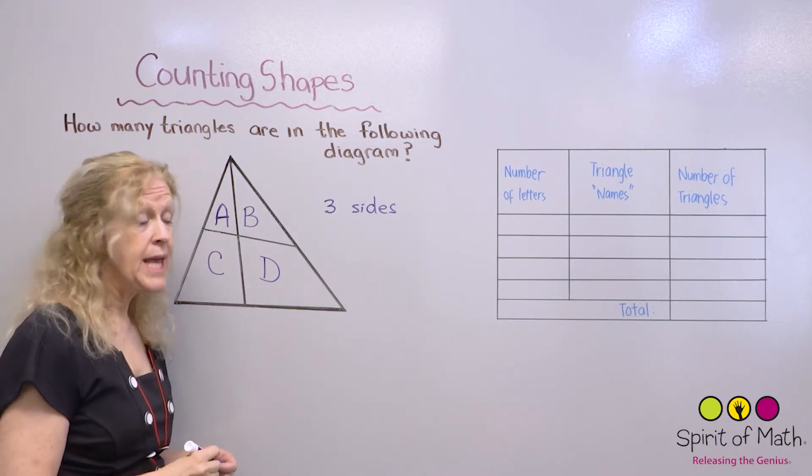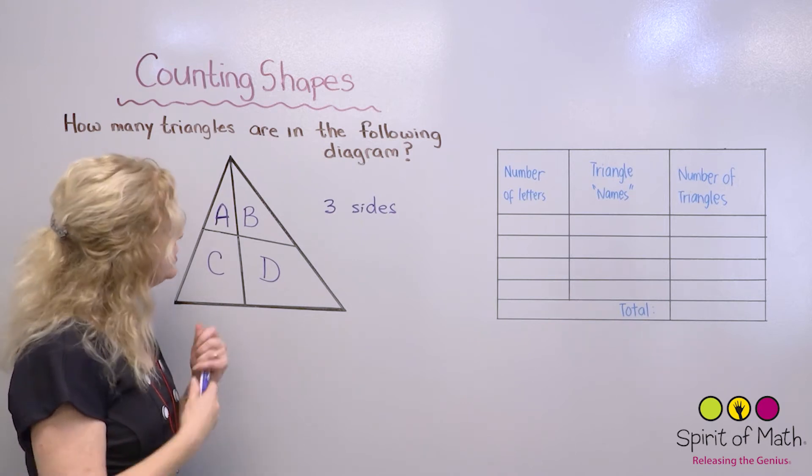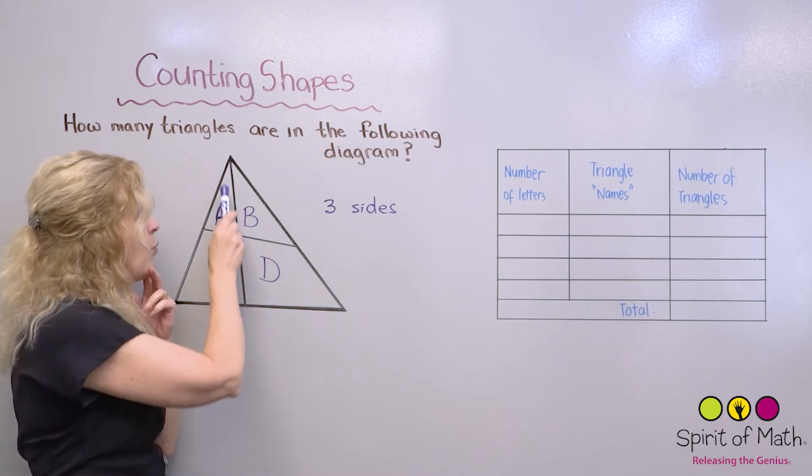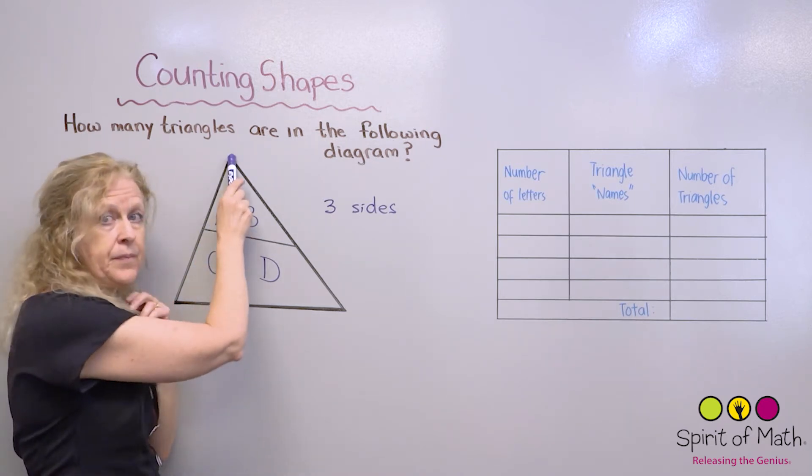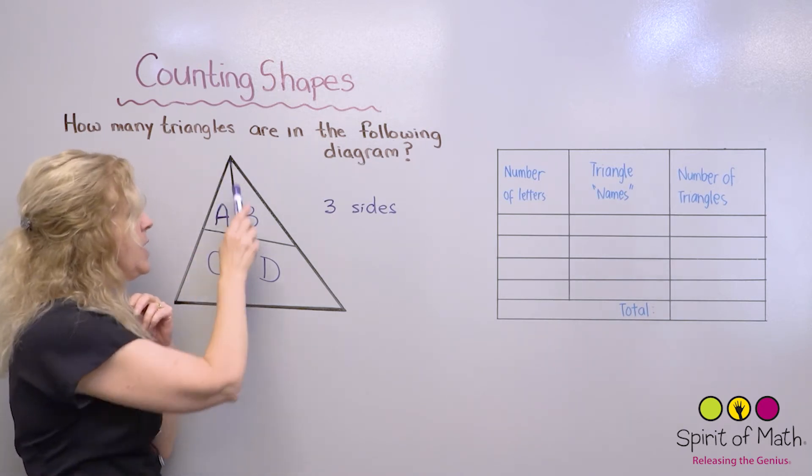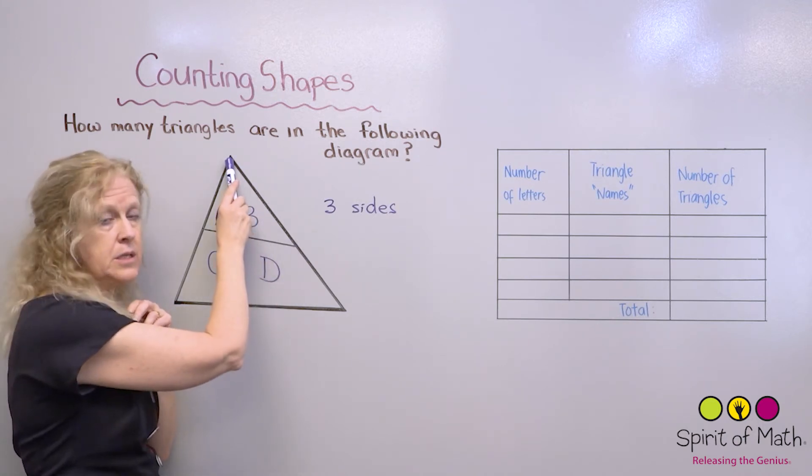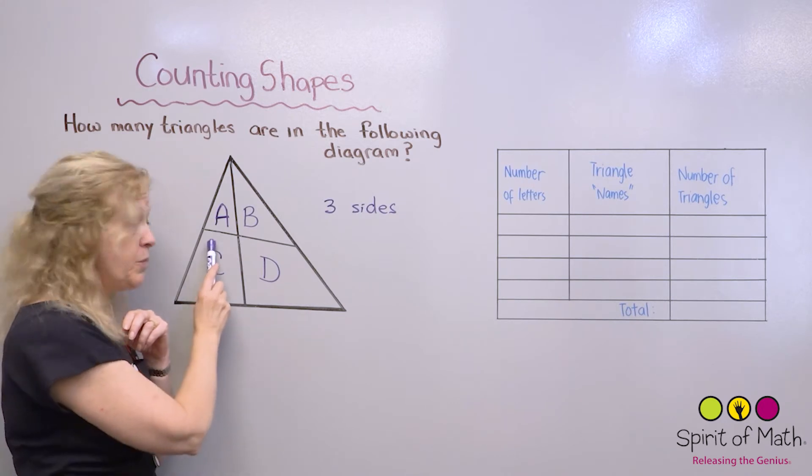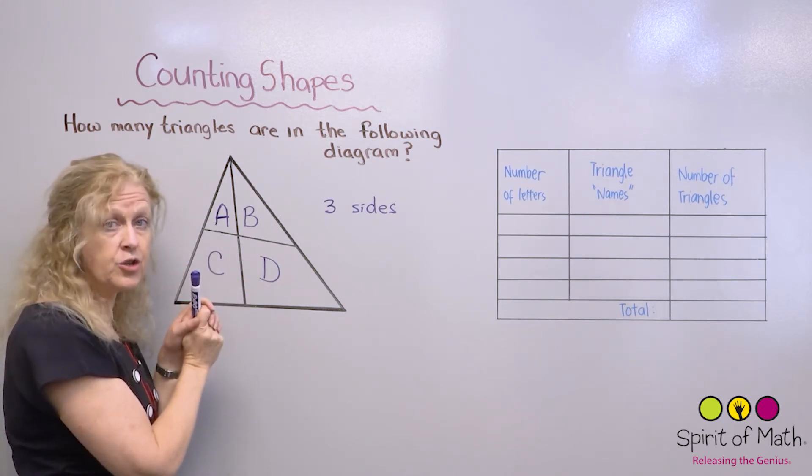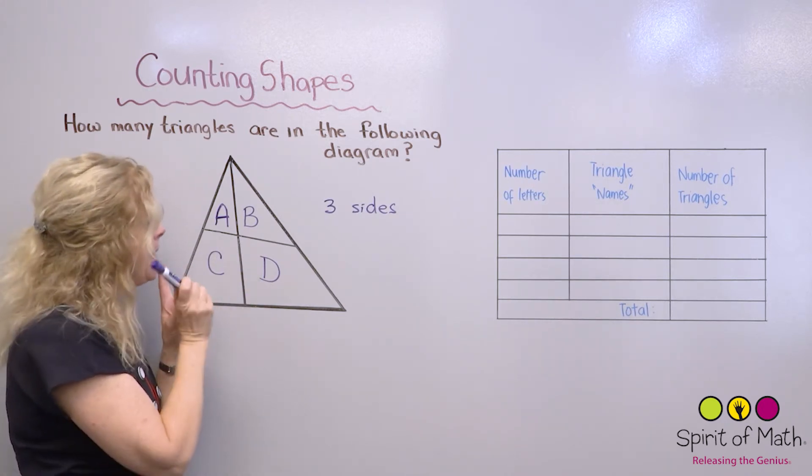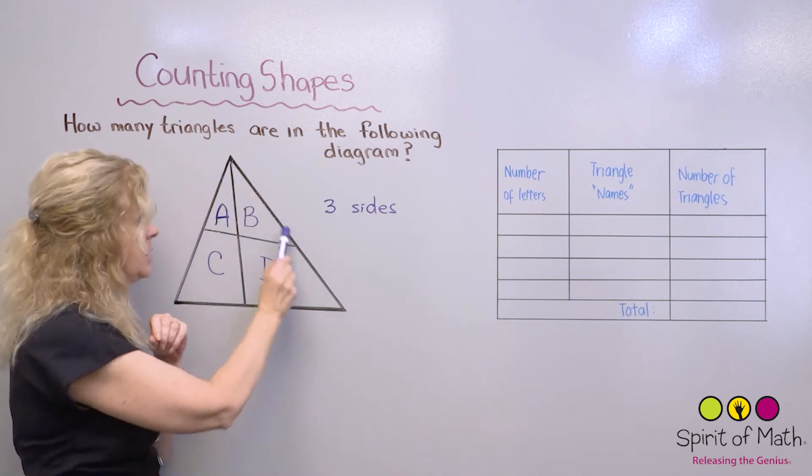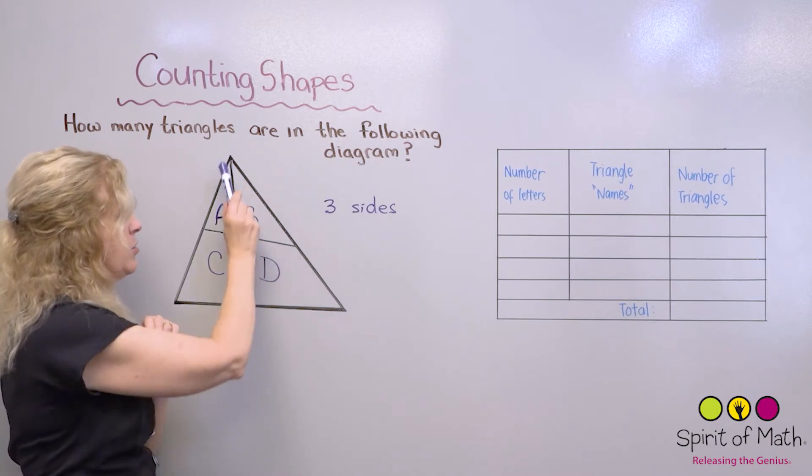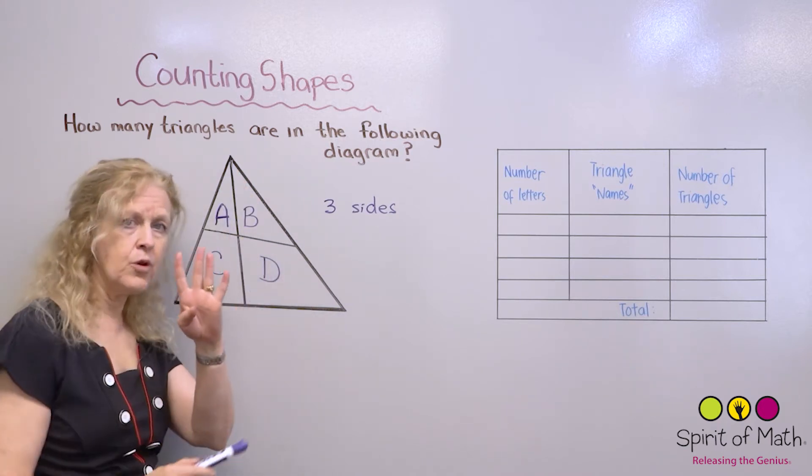We're going to name each of these regions or the spaces. We'll call those regions. We're going to label them with capital letters. And we use capital letters just like your name. When you spell your name, the first letter is always capital. So we're going to use a capital just the same way here because this is the name of this space or region. So call that A. The next letter in the alphabet is B. So we're going to call that B. Next letter is C. And the next letter is D.